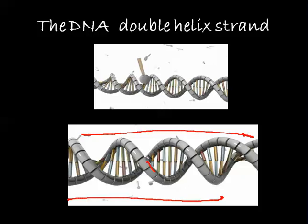This is a double helical structure — it's like a ladder, a complete twisted ladder. This forms a complete DNA strand.